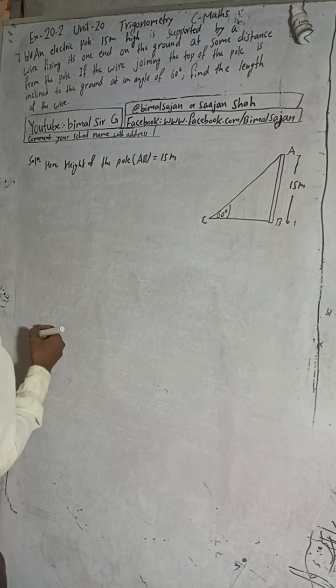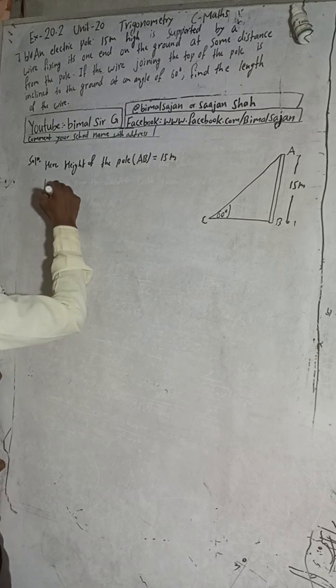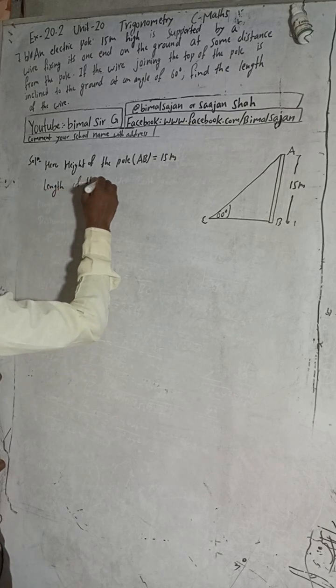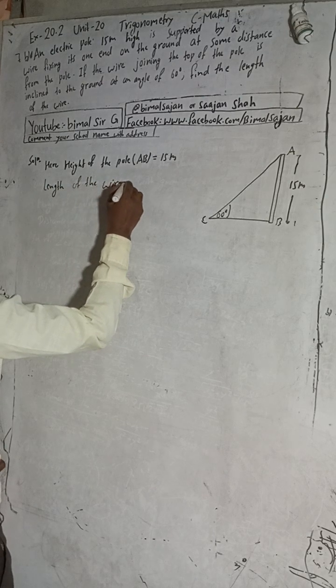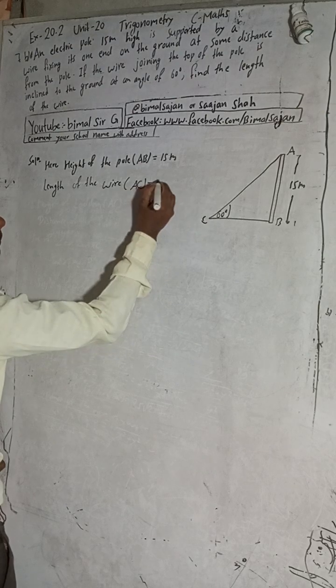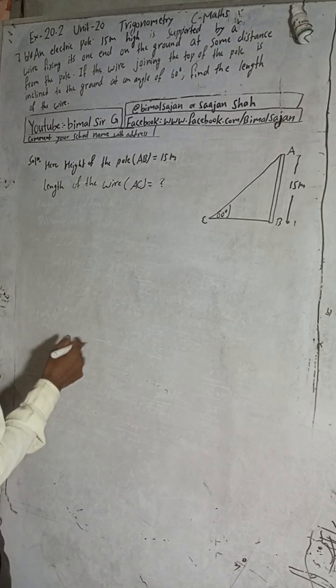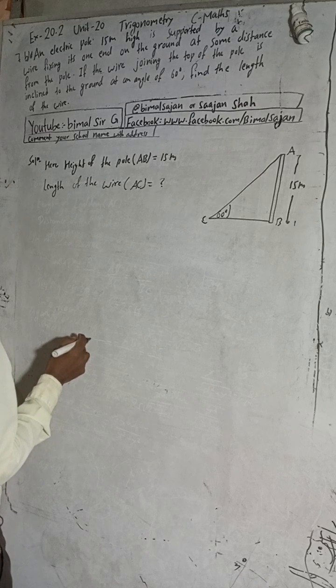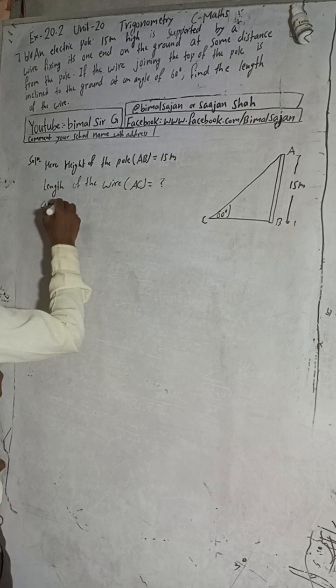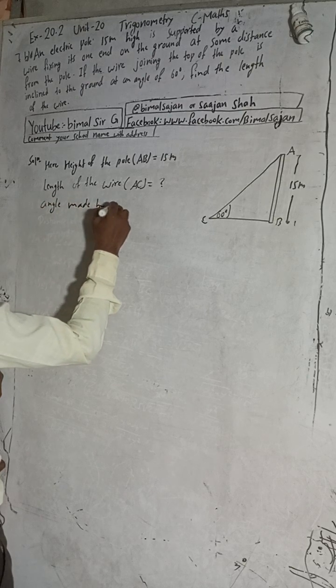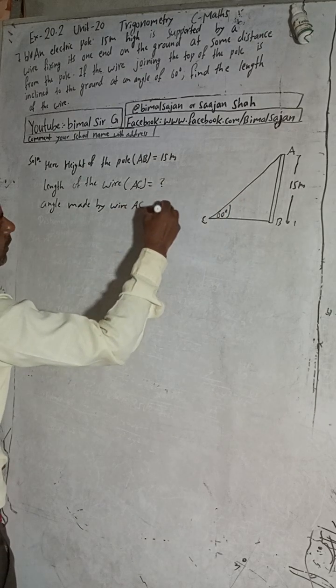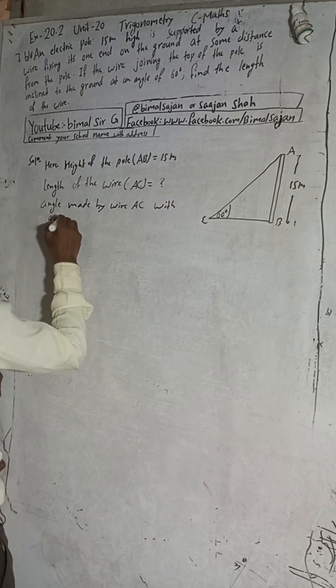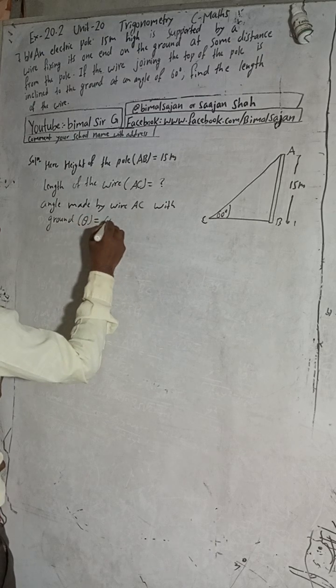Length of the wire AC is equal to what we have to find. Angle is given. The angle made by wire AC with ground, to the ground, that is theta equals 60 degrees.